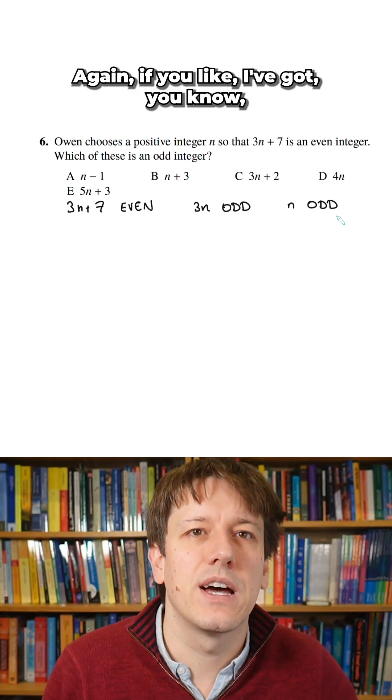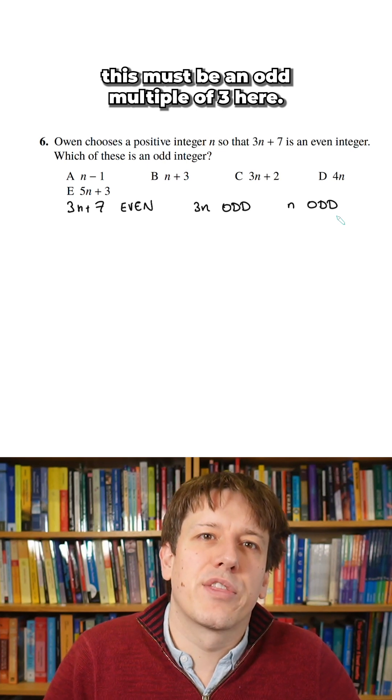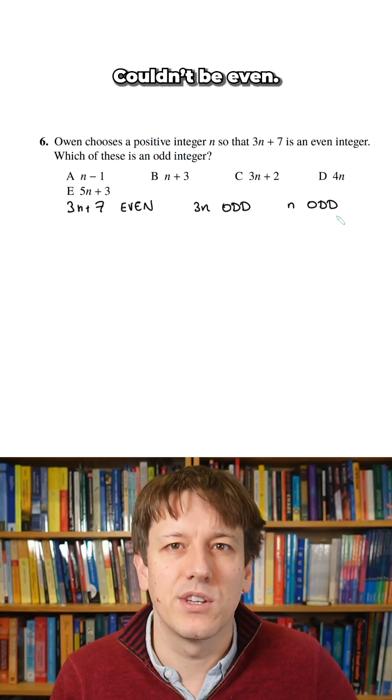Again, if you like, this must be an odd multiple of 3 here, 3n. If I divide it by 3, we're definitely going to get an odd number. Couldn't be even.